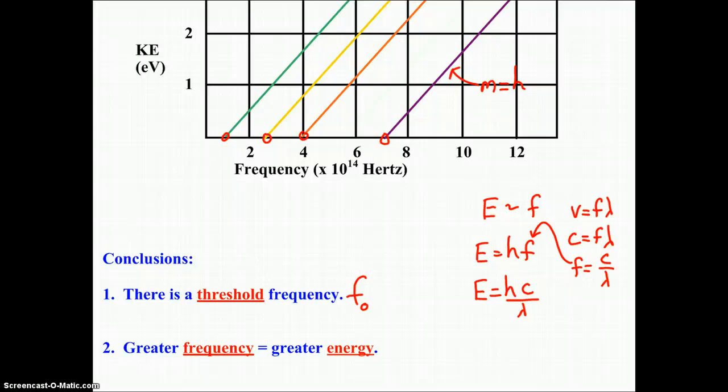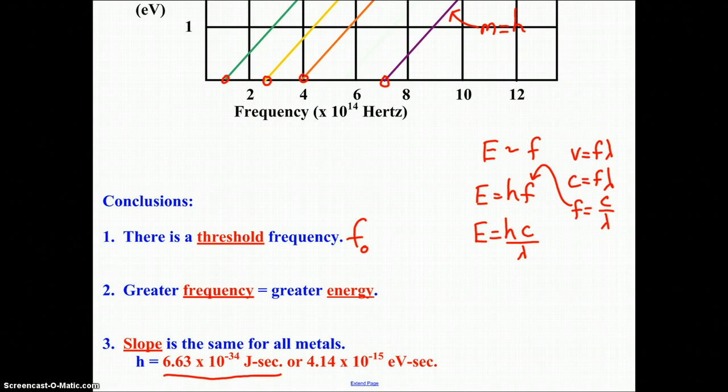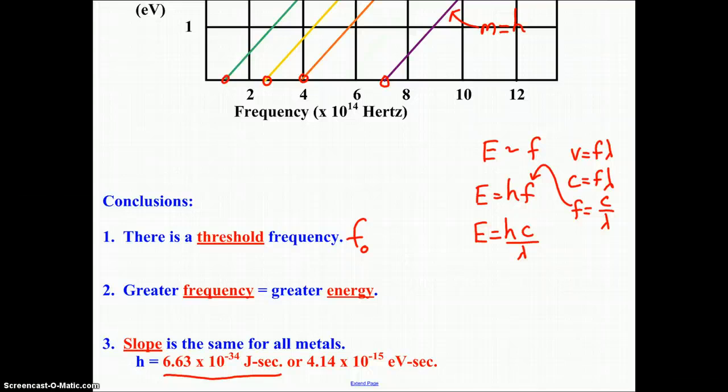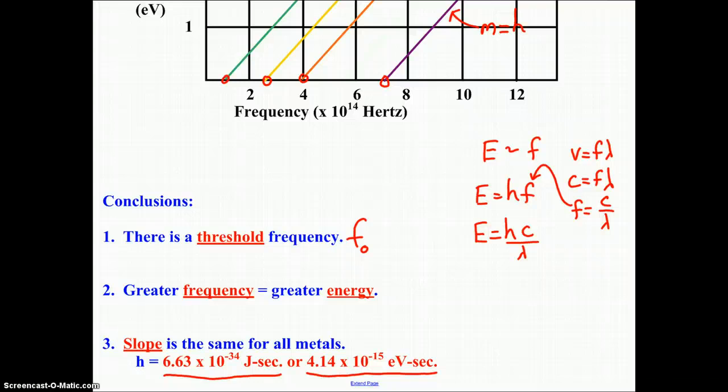And the last conclusion, number three here, is that the slope is the same for all metals. And when we calculate the numerical value of that slope, if our energy is in joules and our frequency is in hertz, we get a value that's 6.63 times 10 to the negative 34 joules seconds. You'll find that value on the constants page on the front page of the New York State reference table. If the energy like this graph is given in electron volts, our slope turns out to be 4.14 times 10 to the negative 15 electron volt seconds. I would encourage you to add that value to your personal reference table. It allows you to take shortcuts if the energy was given in electron volts.